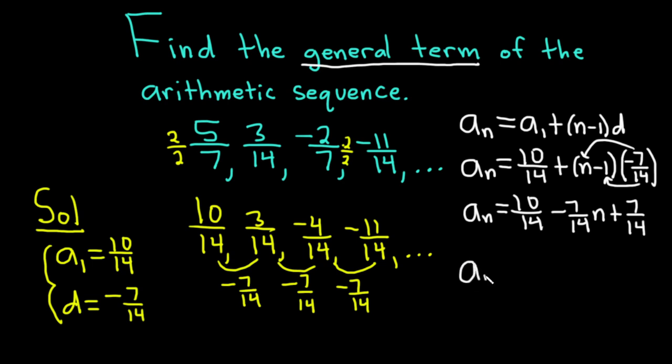So finally we have a sub n is equal to 10 over 14 plus 7 over 14 is 17 over 14 minus, and then we have 7 over 14 times n.